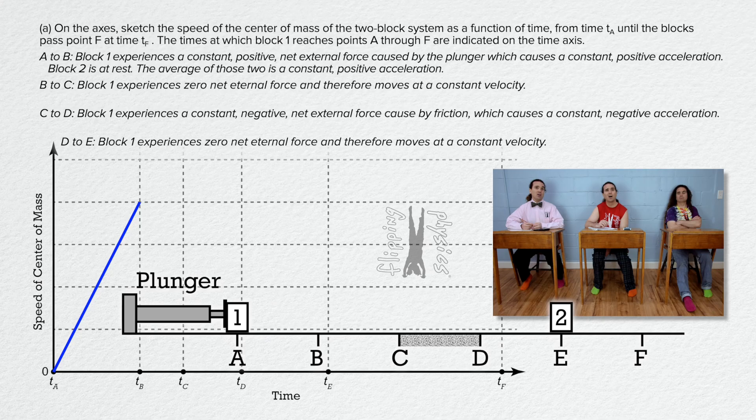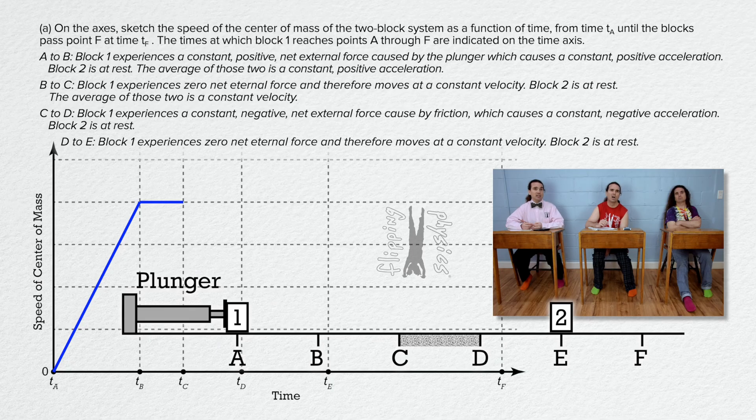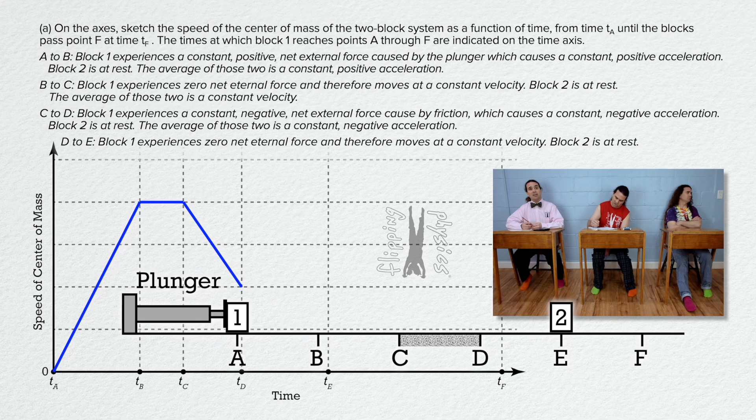Okay, from B all the way to E, block 2 is at rest. So again, we average block 1's motion with block 2 being at rest. From B to C, that is still a constant velocity. From C to D, it is still a constant negative acceleration. From D to E, it is still a constant velocity. But the two blocks collide at E.